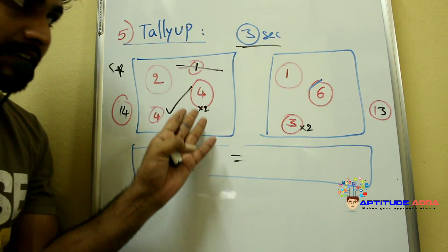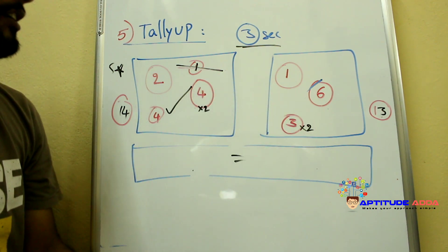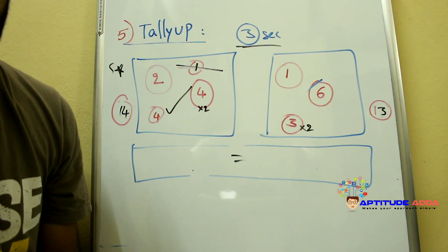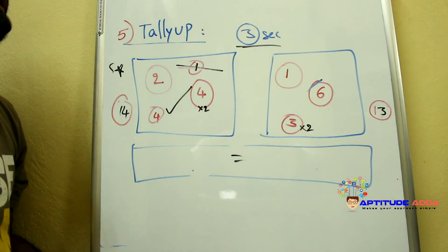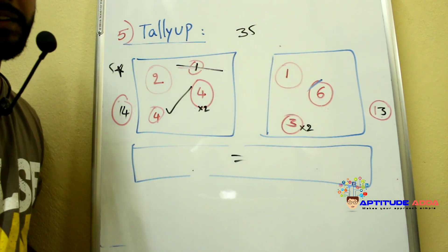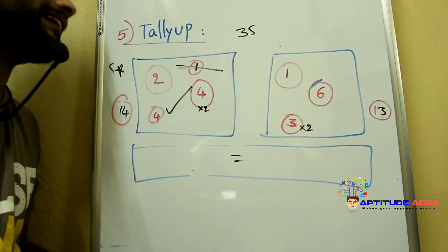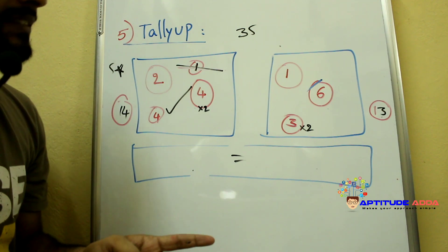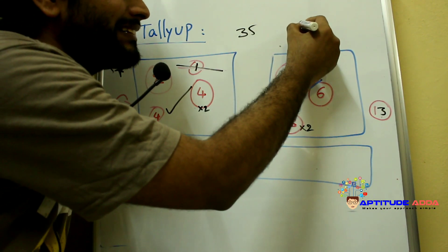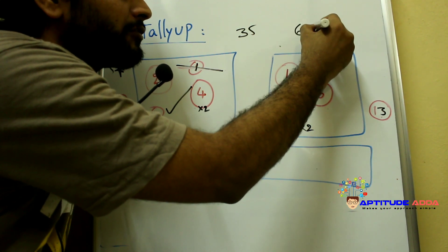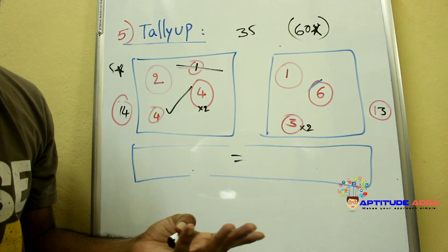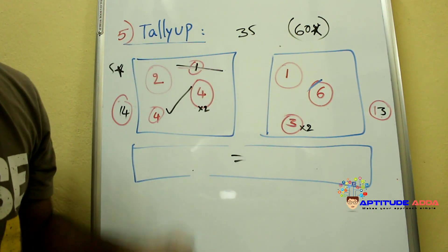Likewise, depending on the difficulty of the question, you may get 1 star point or you may get 5 star points. Overall there will be 35 questions in this section, and if you click on correct values within the time period, you have to get at least 60 star points from this section. If you get 60 star points in this section, you will clear this section.